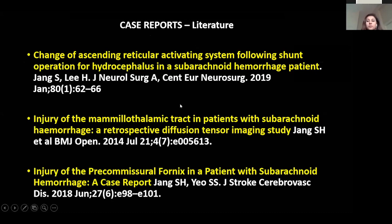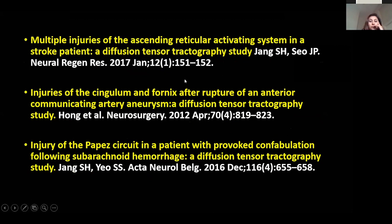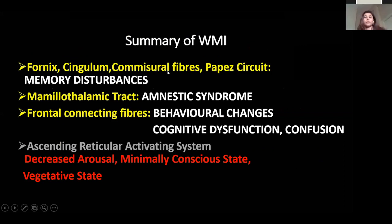Reviewing the literature from the past five years, significant work has been done on tractography in aneurysmal SAH. Studies demonstrated changes in the ARAS following shunt operations for hydrocephalus — they could actually show an increase in fibers following a shunt. There was injury of the mammothalamic tract in SAH patients, especially AComA. Injuries of the fornix were reported from IVH, SAH, or ICH. Different parts of the ARAS could be affected, contributing to minimally conscious or vegetative states. Injury of the Papez circuit accounts for the memory changes commonly seen. To summarize: the fornix, cingulum, commissural fibers, and Papez circuit account for memory disturbances — especially in AComA the amnestic syndrome; the mammothalamic tract and frontal basal connecting fibers for behavioral changes; and when the ARAS is knocked off, the outcome is very poor — decreased arousal, minimally conscious, or vegetative state.